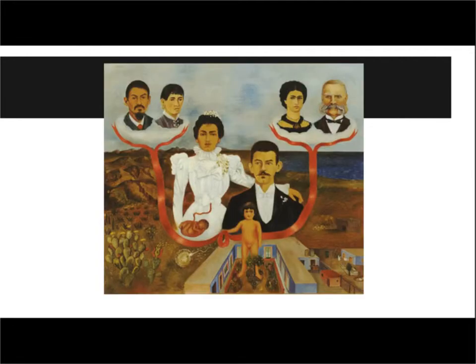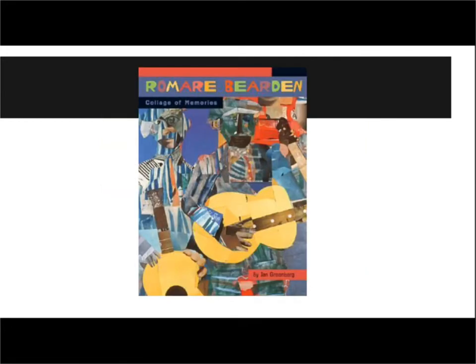We're also going to look at the works of Frida Kahlo, such as this one here called Family Tree. We're going to create our own family tree, and we're also going to look at the works of Romare Bearden and read his biography called Collage of Memories. Hope you're excited!